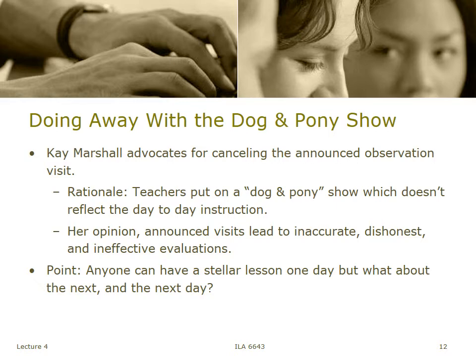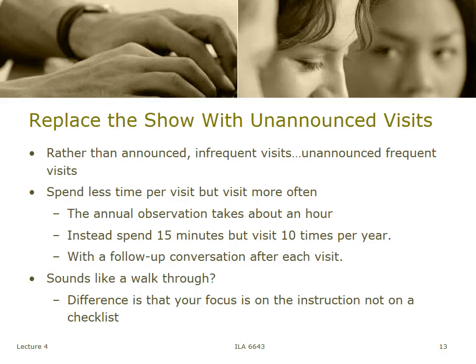When we take judgment out of evaluations, we end up with a system that asks, 'What can we do to make you better?' We're not saying you're not good — we just want to make you better. Marshall advocates getting rid of the announced visit and replacing it with unannounced visits. She also says we need to stop infrequent visits and replace them with more frequent visits. The key is spending less time per visit but doing it more often — when you visit less per visit but more often, you ultimately get more observation time.